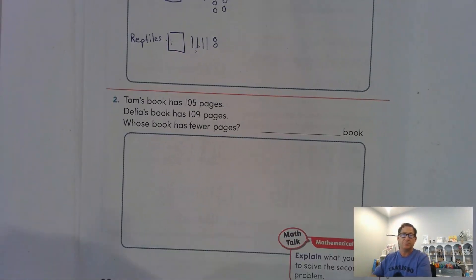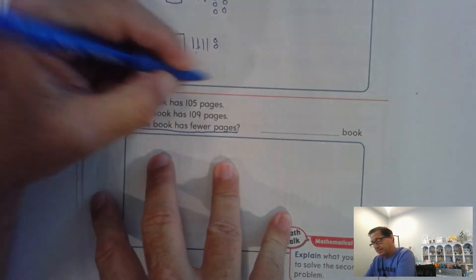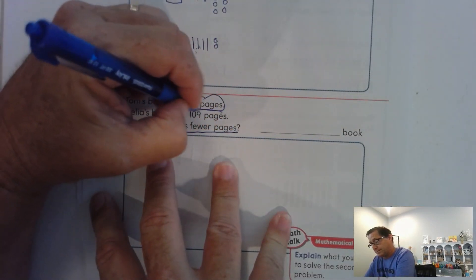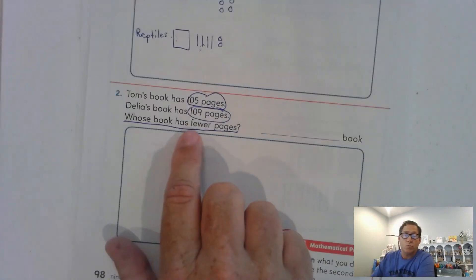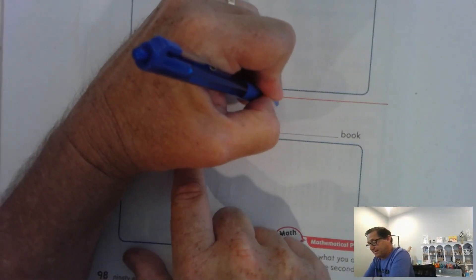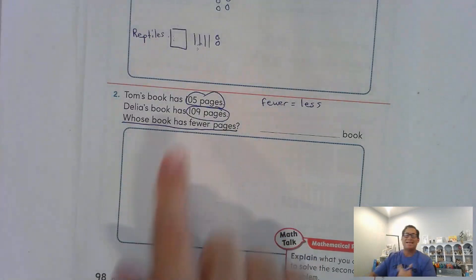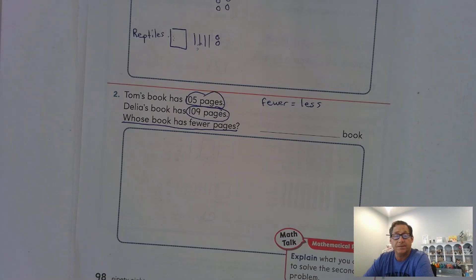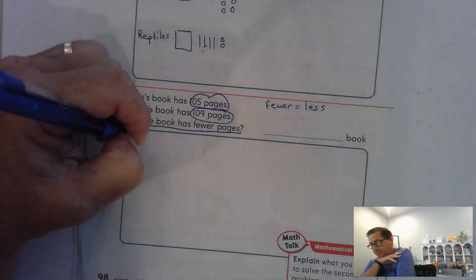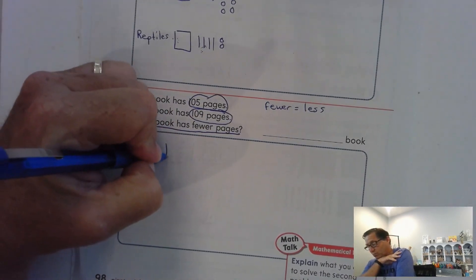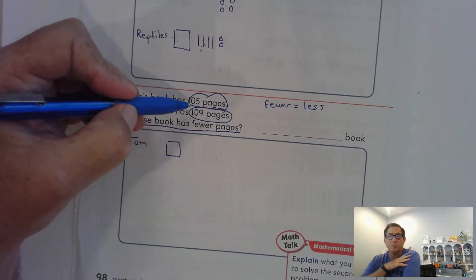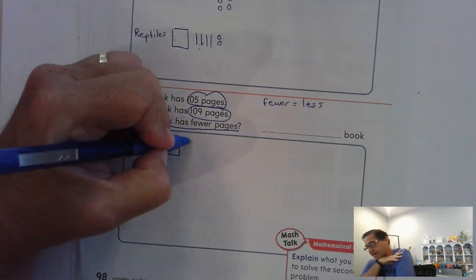Let's look at number two. Tom's book has 105 pages. Delia's book has 109 pages. Whose book has fewer pages? Fewer, that's the same as saying less. Which one has less? So make sure you're reading the question carefully. So Tom, I would represent that with 100 block. There are no tens, but there are five ones.